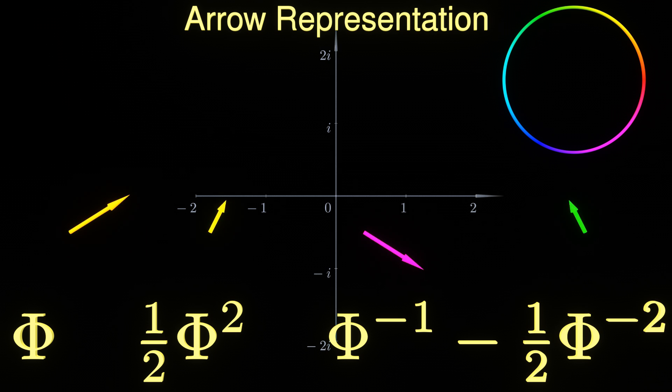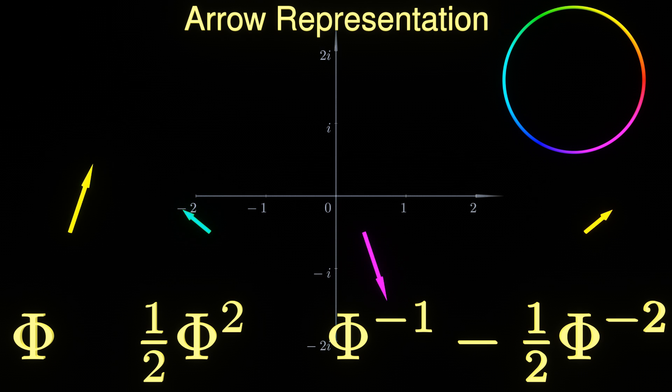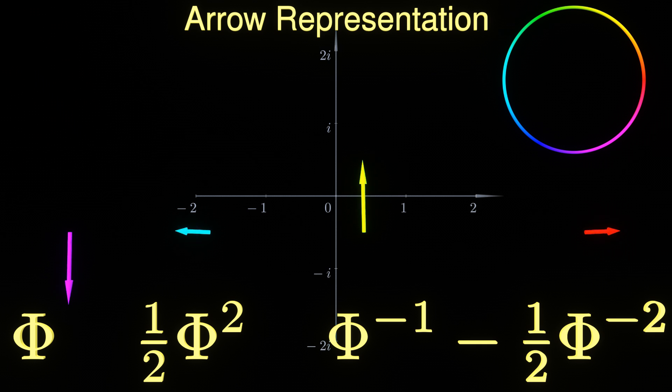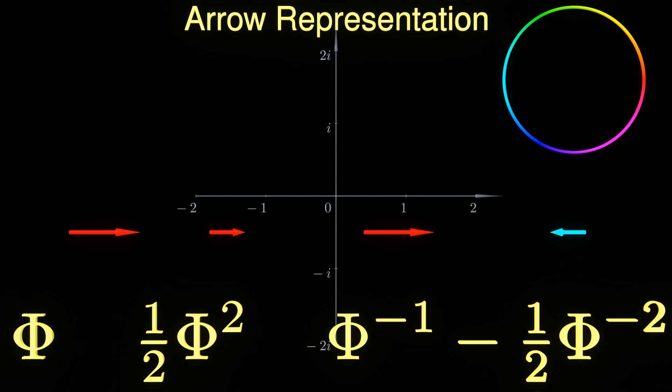We now look at four different possible monomials and identify the geometric meaning of each term. Each monomial can be illustrated by an individual arrow. The absolute value of the coefficient translates into its length and the phase of the coefficient provides the initial orientation of the arrow. In our case, three arrows point along the positive real line and the last one points into the negative direction.